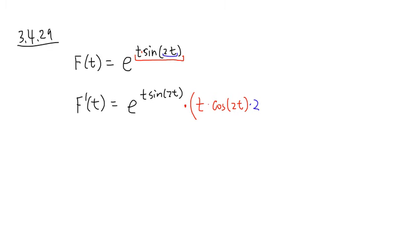And then what you do next is you are going to add the second function, which is sine of 2t, times the derivative of t, which is going to be 1. And that's pretty much it.